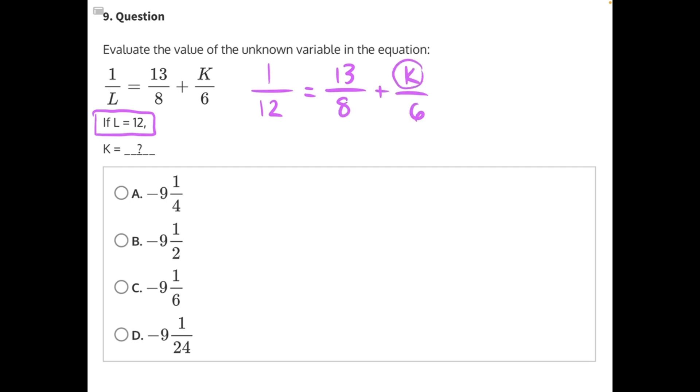Now we can begin to isolate K so we can find its value. We can't touch the 6 until this entire fraction is isolated. So let's start by moving 13 over 8. It's being added to K, so the opposite operation we need to do to move it is subtraction. Subtract it from both sides of the equal sign, and we are left with 1 over 12 minus 13 over 8 equals K over 6.